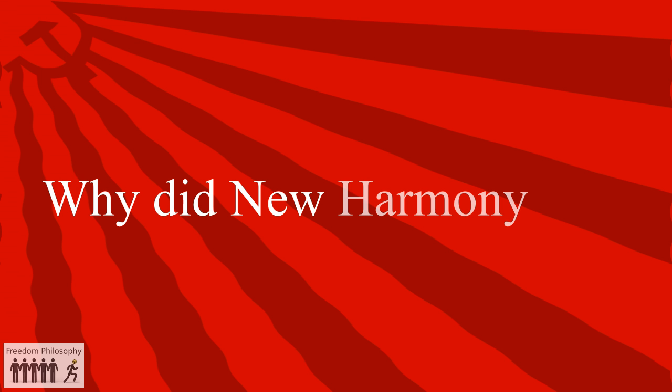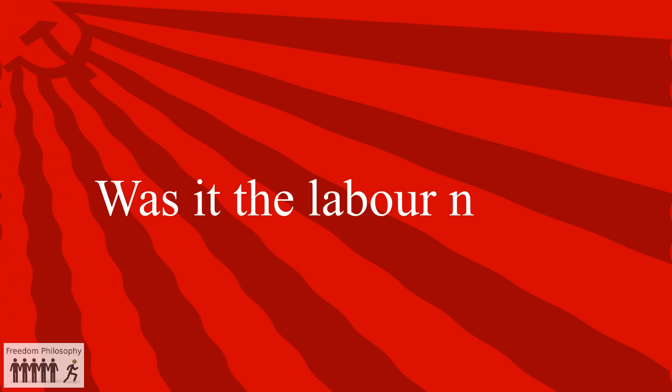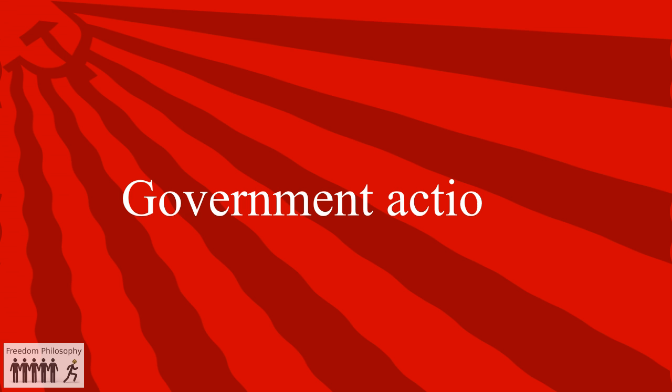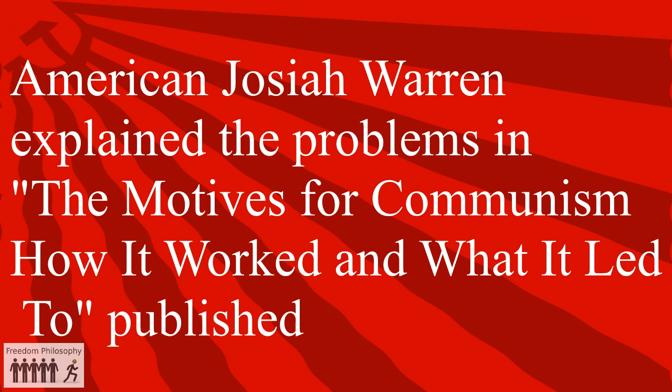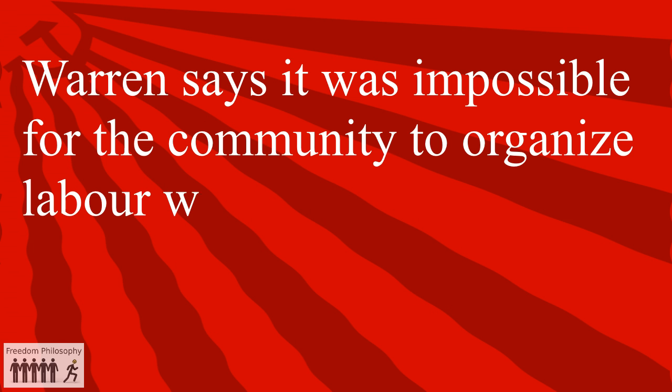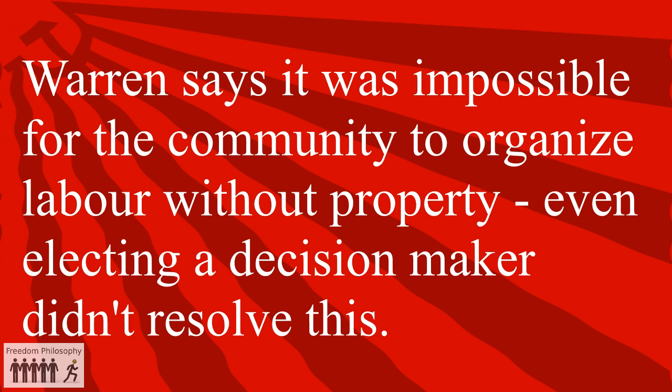Why did New Harmony fail? Was it the labour notes? No. Government actions? No. American Josiah Warren explained the problems in his work "The Motives of Communism, How It Worked and What It Led To," published in 1872. Warren said it was impossible for the community to organise labour without property. Even electing a decision maker didn't resolve this.